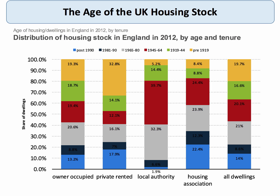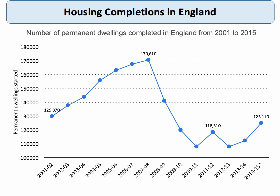The lack of supply is shown by the age of the UK housing stock. This chart shows the distribution of the housing stock in England in 2012 by age and by tenure. Look at the yellow section — these were homes built before 1919. In 2012, taking all dwellings, a fifth of homes in the UK were built nearly 100 years ago, whereas only 14% of homes have been built in the last 25 years. So the UK's housing stock is ageing quite rapidly. The number of housing completions, having fallen sharply during the recession, started to rise a little bit, but it's still well below the level it was at in 2007.